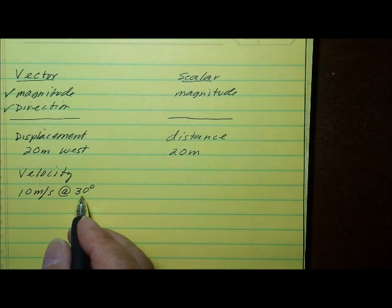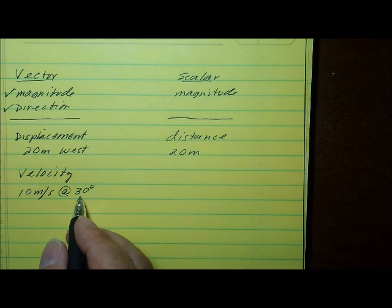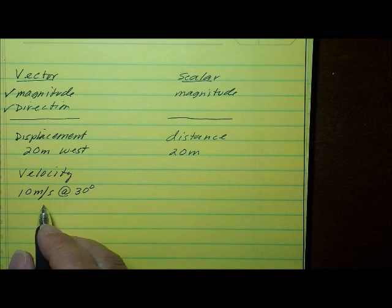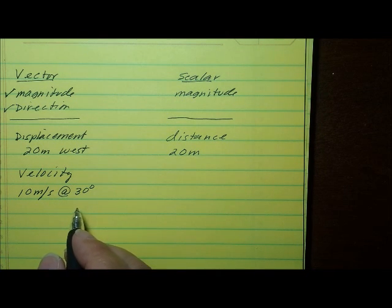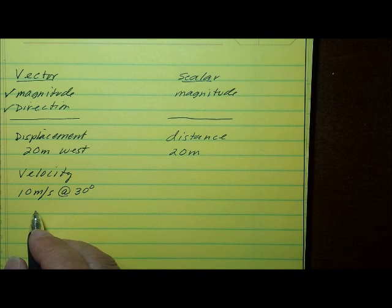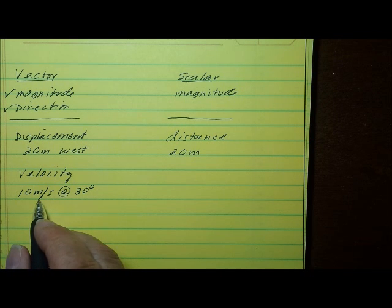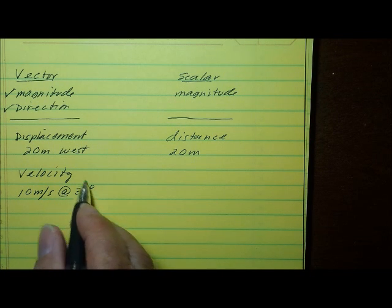Now that would be a compass direction. You wouldn't necessarily have to use a compass direction. You could say 15 kilometers per hour east or 3 meters per second up, 5 meters per second down. But you have to have a speed with a direction. That makes it a velocity.